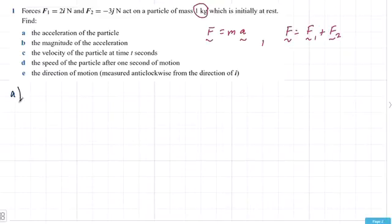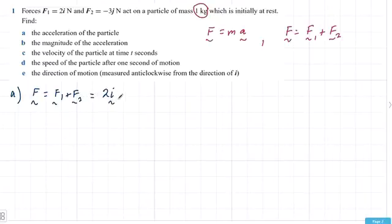In order to do this question, we first have to find the force, which is F1 plus F2, which here would be 2i minus 3j newtons. That's the force.